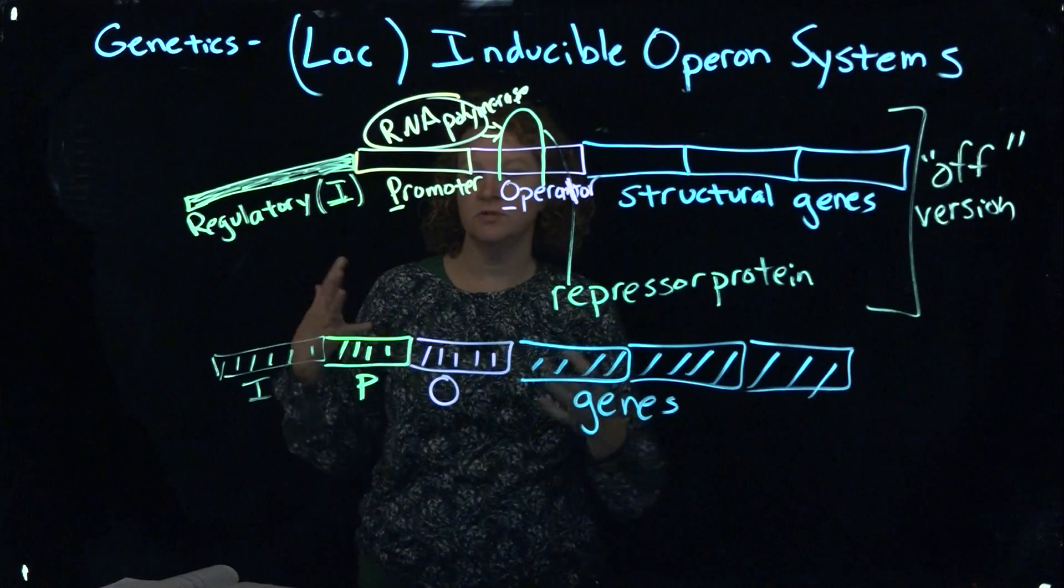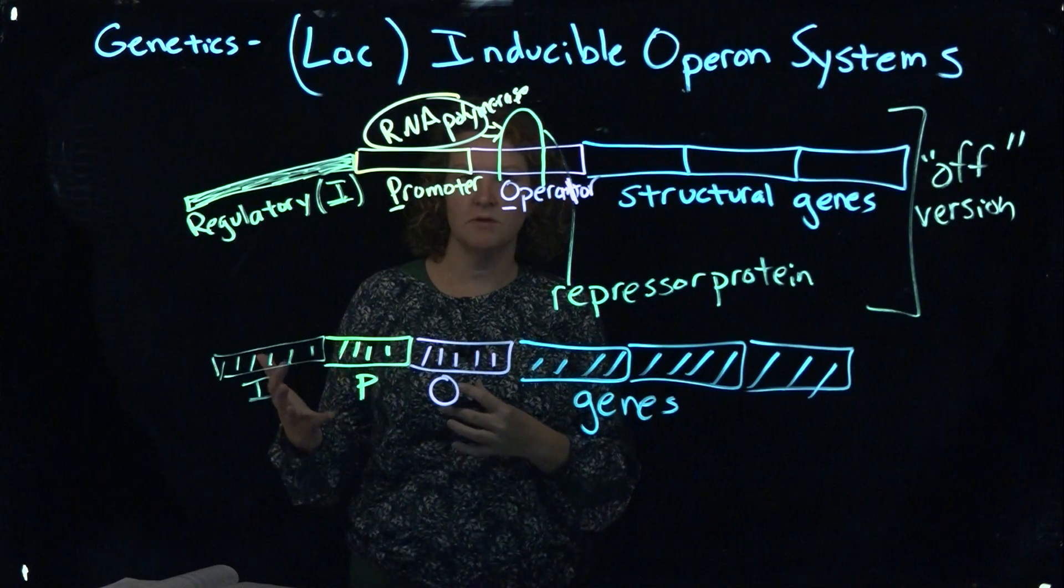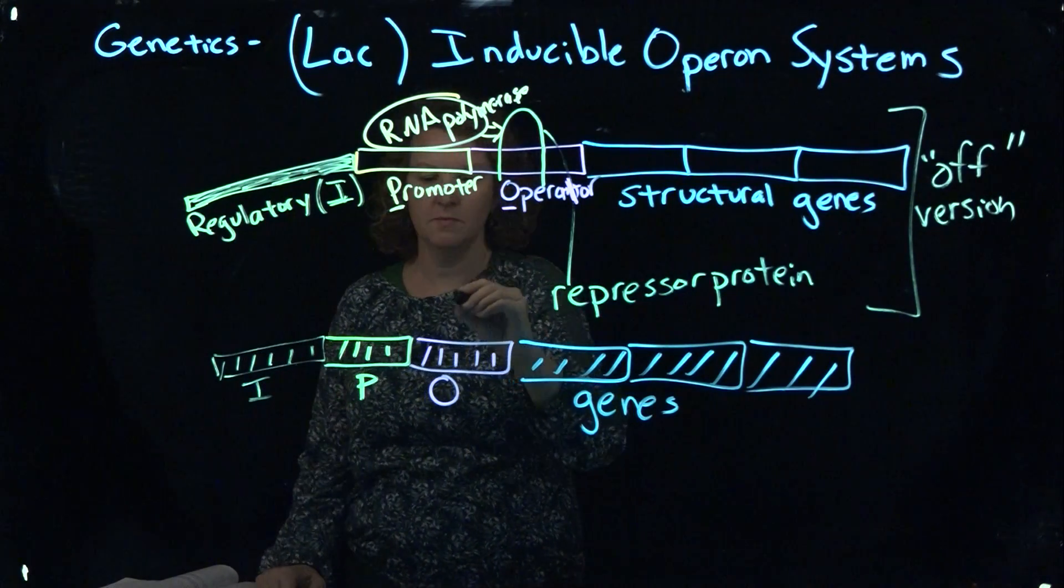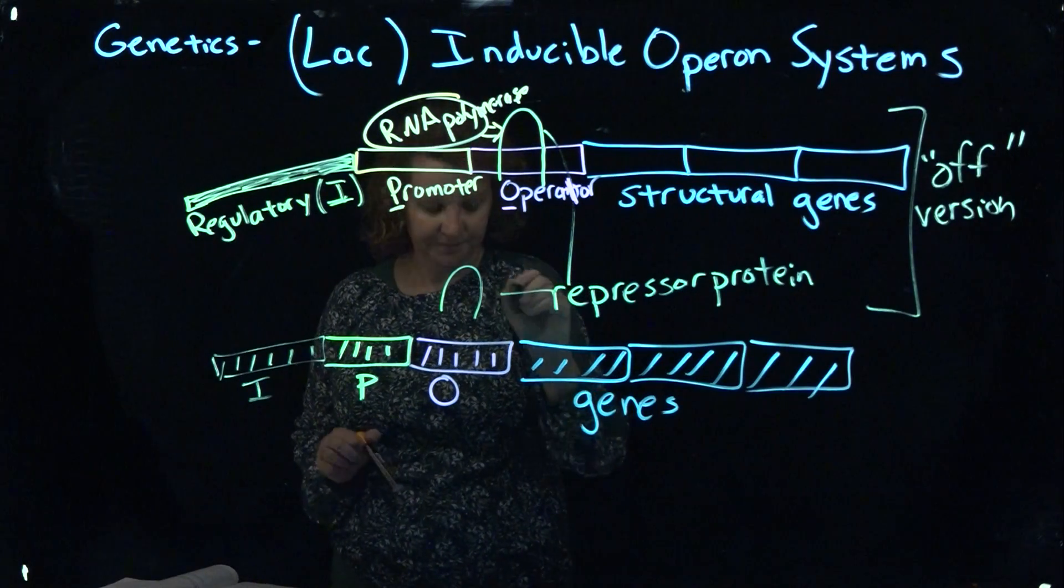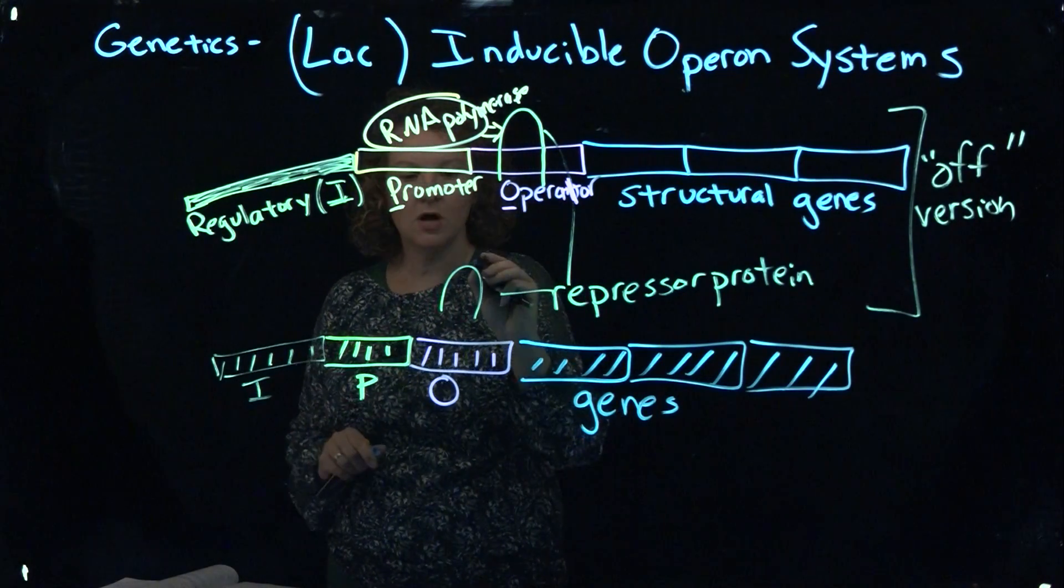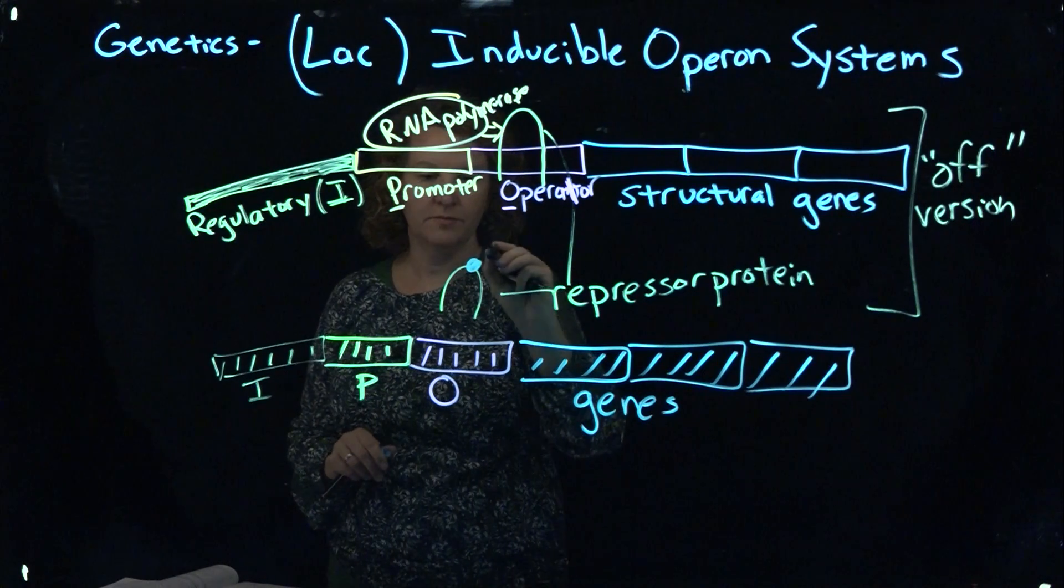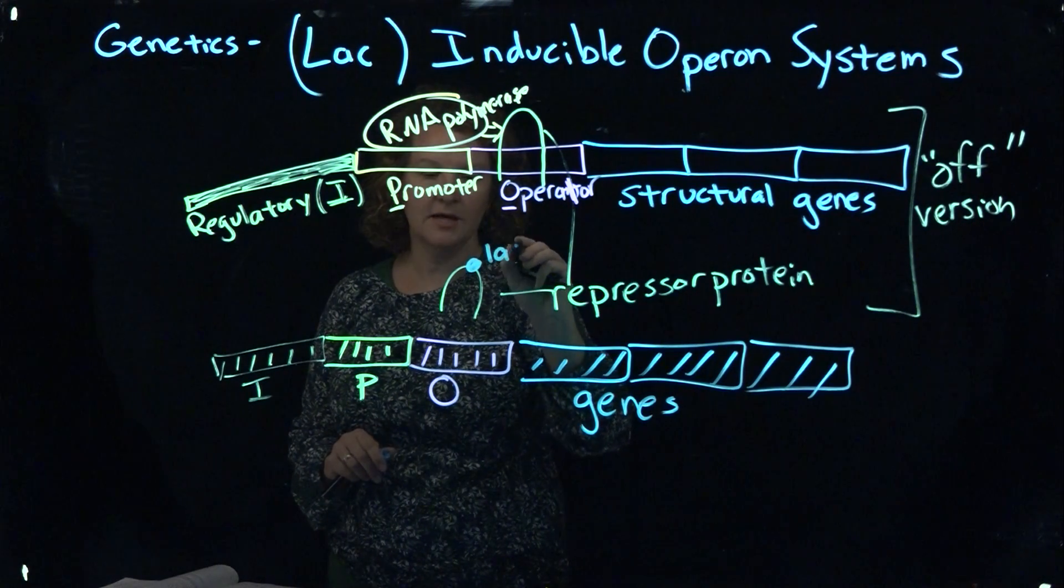So what will happen is this repressor will have that particular sugar. And if you look at the details, lactose is a small amount that's changed to something called allo lactose, but it will actually bind to the repressor. So here's our repressor again. And it will cause the shape to change a little bit here. And I'm going to write lactose. It's really allo lactose.